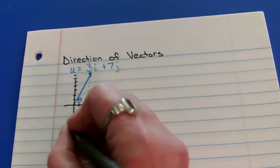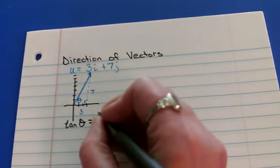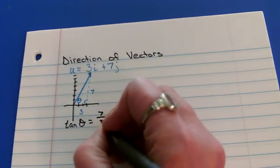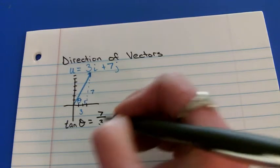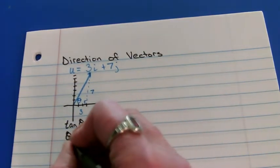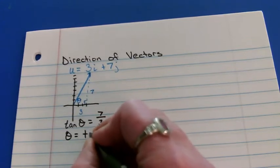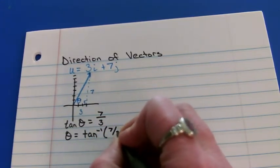So, to find that angle, the tangent is going to be 7 over 3. It's going to be the y, vertical distance, divided by the horizontal distance. To find the angle, we're going to do inverse tangent of 7 over 3.